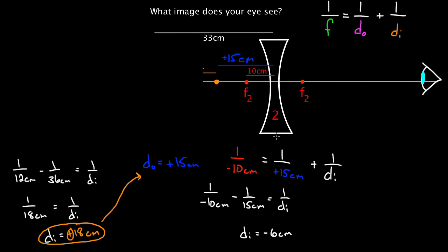That's what our second image is gonna be. So what does negative six centimeters mean? This is always measured from the lens. Negative image distance means on the left-hand side, the opposite side from your eye. So I'm gonna draw a line from the center of my lens six centimeters to the left — somewhere around there. That's gonna be six centimeters — that's our image distance. And that means our final image is right there.